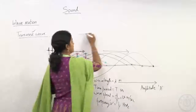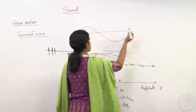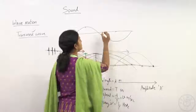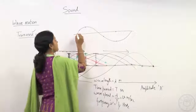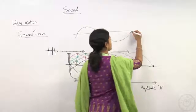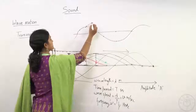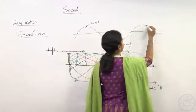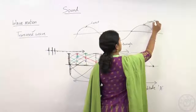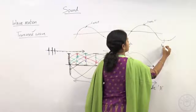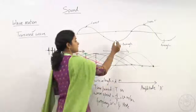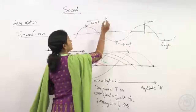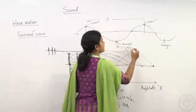During transverse wave propagation, if I take a photograph of the wave at a given moment, the upper part of the wave is called the crest and the lower part is called the trough. The distance between any two consecutive crests, or any two consecutive troughs, is called the wavelength lambda (λ).